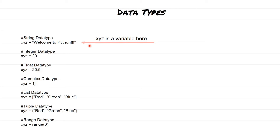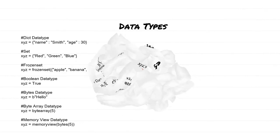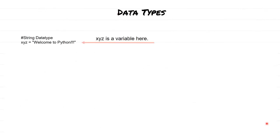One thing to notice is that there is no explicit segregation between data types. Python automatically assumes the correct data type based on the value you provide. For example, if you type xyz equals 'welcome to python', Python understands it is a string. If you want to check the type of a variable, you can use the type function — the syntax remains the same regardless of the data type.